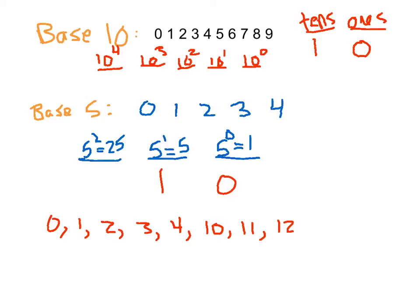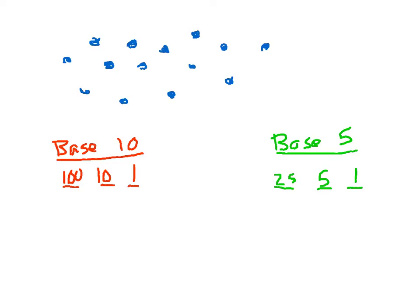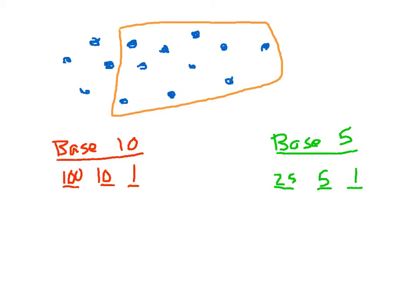Let's look at an example: count the blue dots and represent that number in both base 10 and base 5. In base 10, we count 1 through 10 — once we get to 10, we group them together. We have one group of 10, and then 1, 2, 3, 4 left over — not enough for another group of 10. So in base 10, we write this as 14: one 10 and four ones.